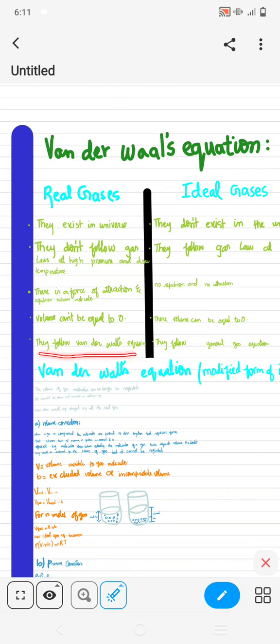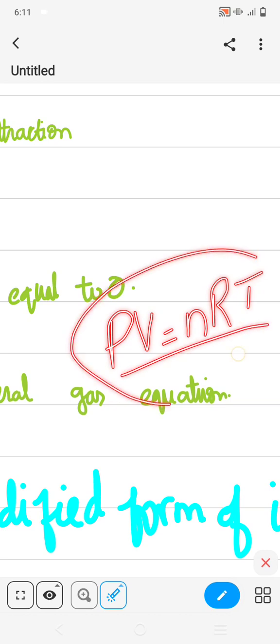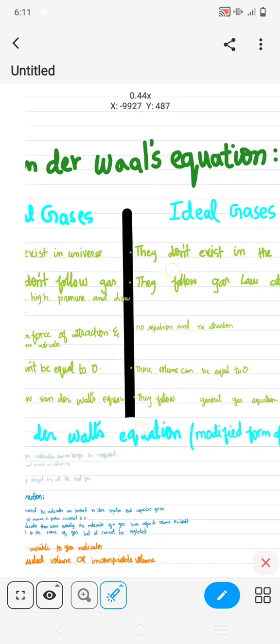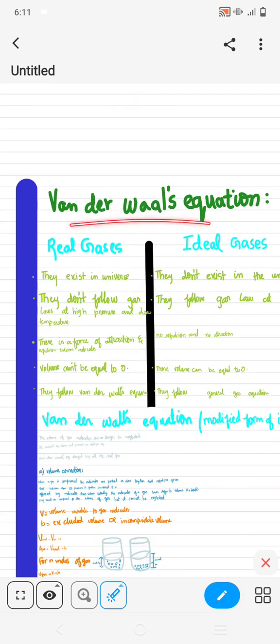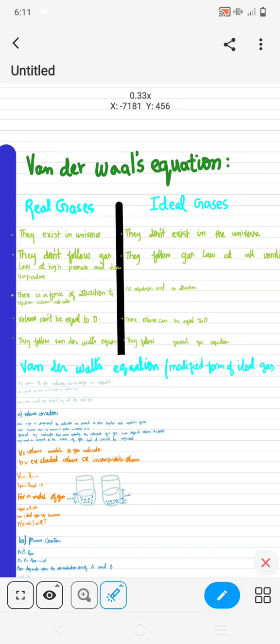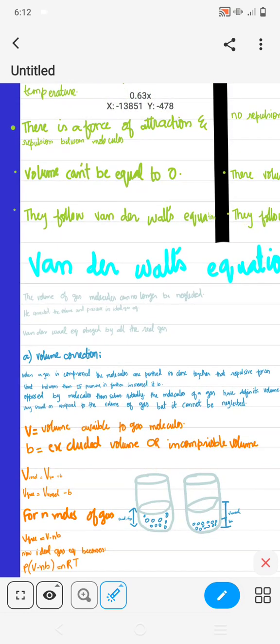They follow Van der Waals equation and they follow general gas equation that is PV is equal to nRT. Van der Waals, a scientist, modified this gas equation, and this gas equation is only valid for ideal gases, not for real gases. So why are we going to study this equation? Van der Waals equation basically modified the form of PV equals nRT.